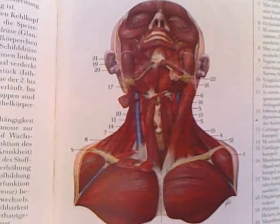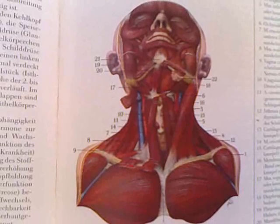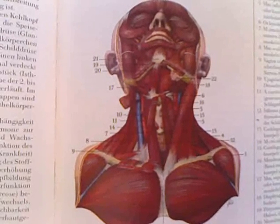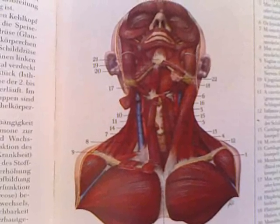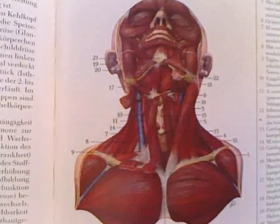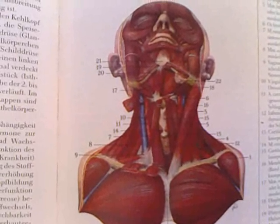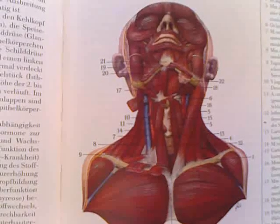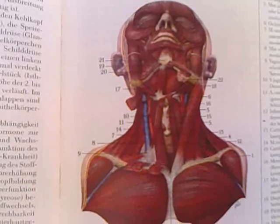Number 10 is the internal jugular vein. Number 11, in red, is the right common carotid artery. Number 12 is the thyroid. Number 13 is the cricoid cartilage. Number 15 is the thyroid cartilage.